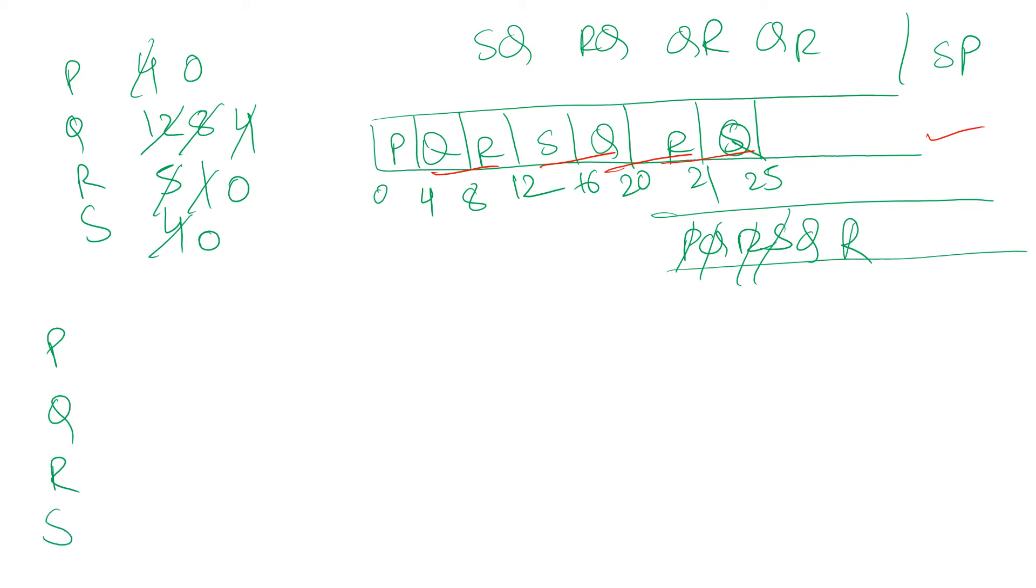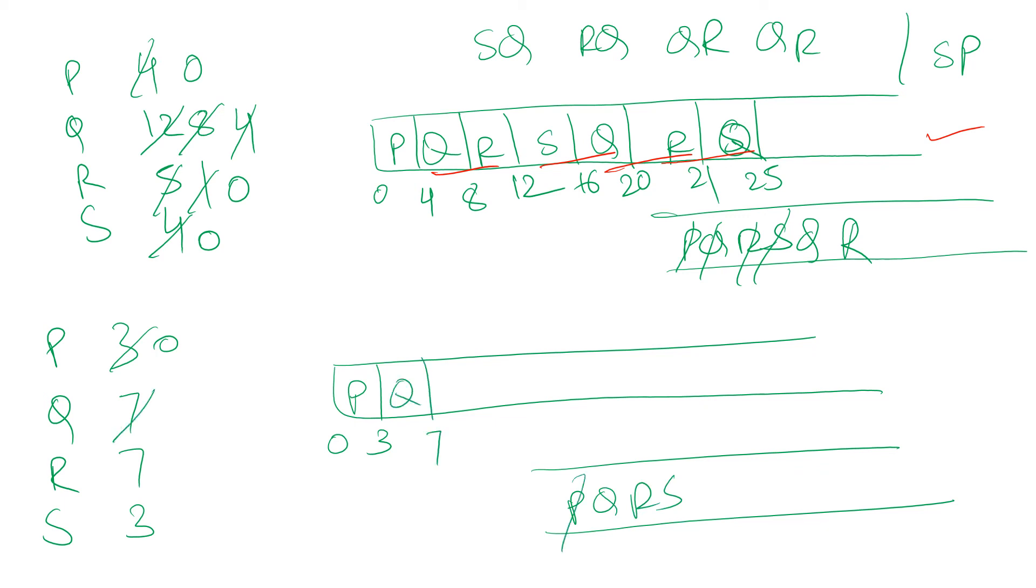For the last option D, the burst times given were 3, 7, 7, and 3. Let us check for that. This is our Gantt chart. We start scheduling P up to 3. PQRS, P removed. Next Q up to 7. This becomes 3, pop, push. R up to 11. This becomes 3, pop and push.